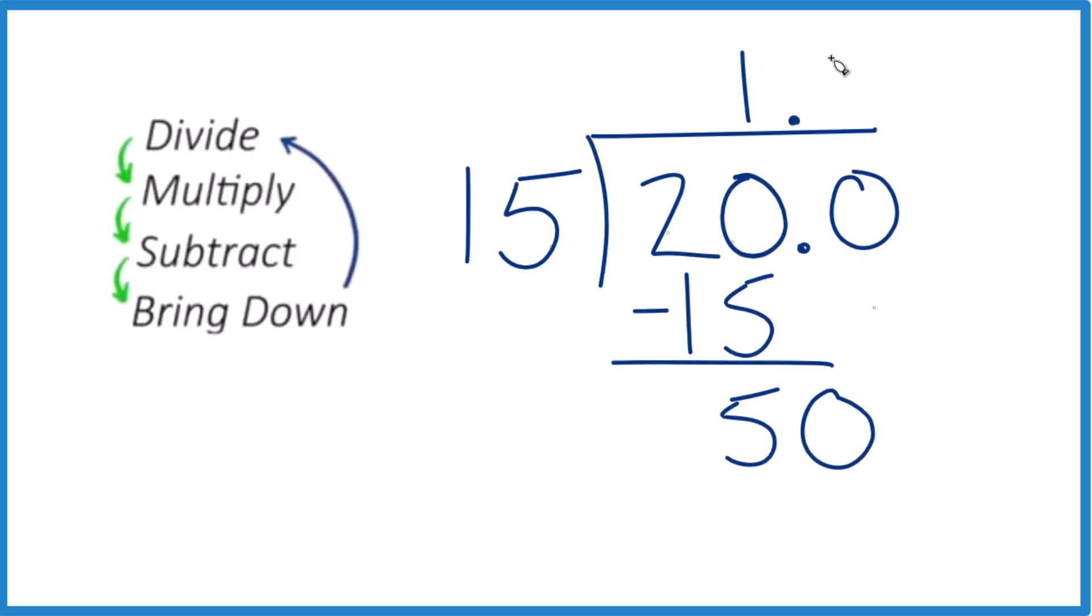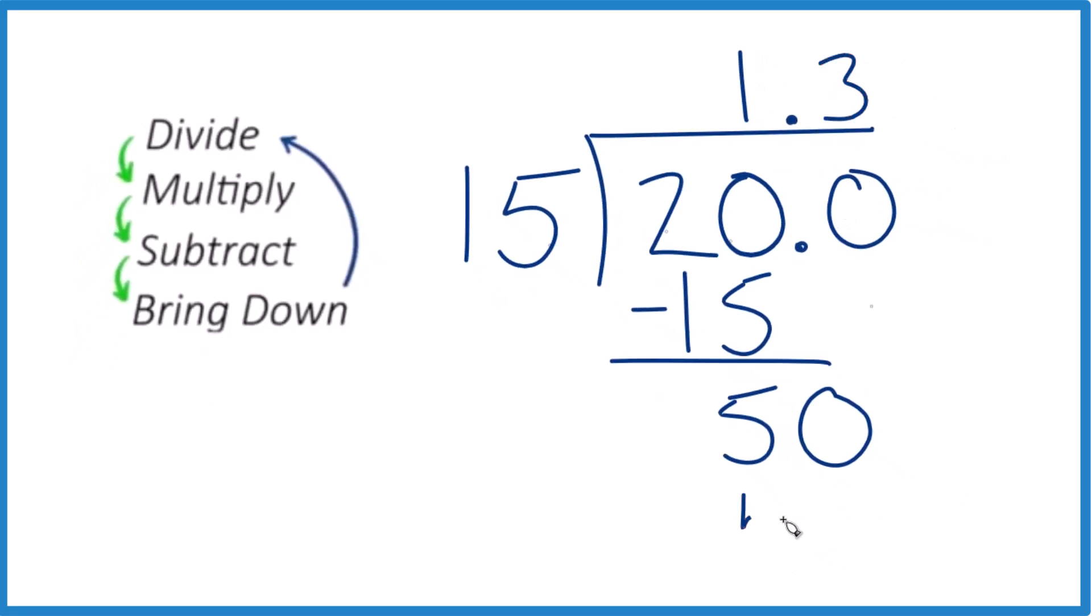15 goes into 50. 3 times 15, that's 45. So then we subtract and we get 5.